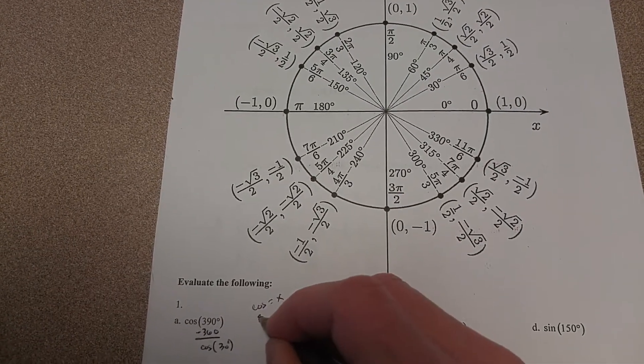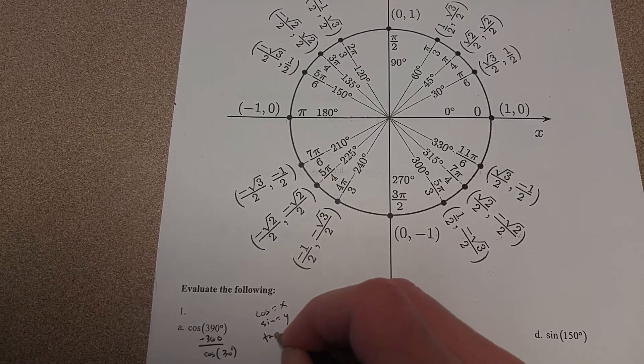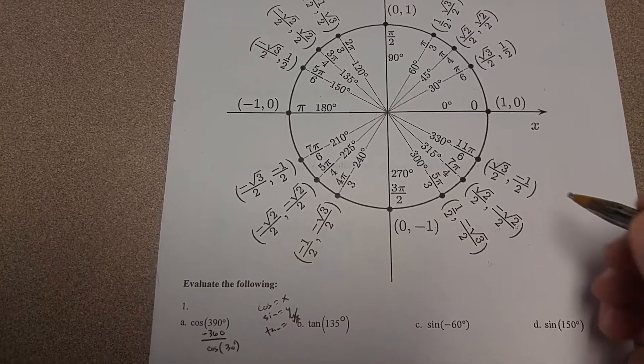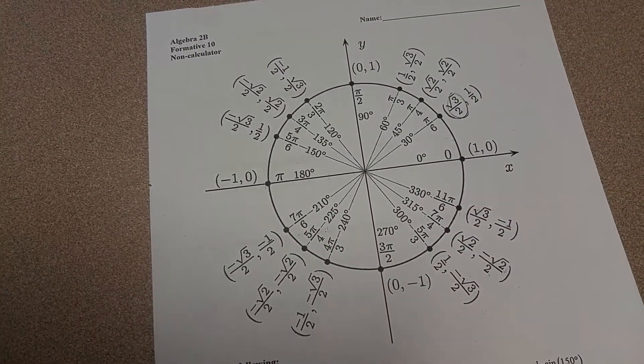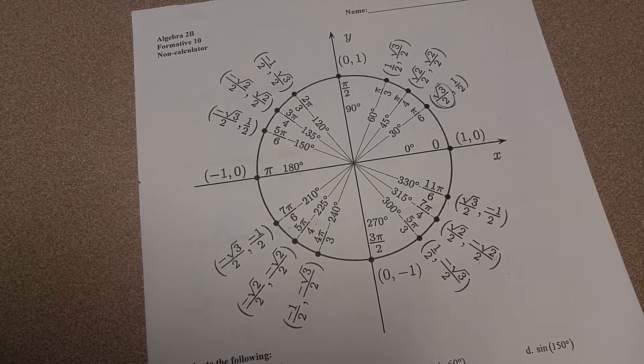Remember, cosine is X, sine is Y, tangent is Y over X. So the cosine at 30 degrees is just this X coordinate right here, which is root 3 over 2.